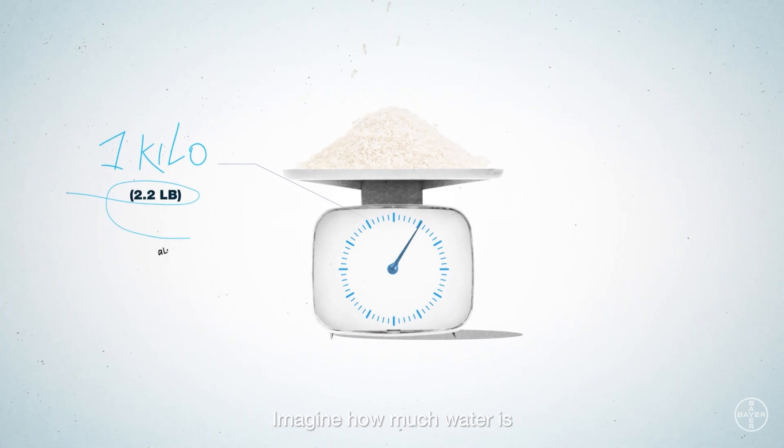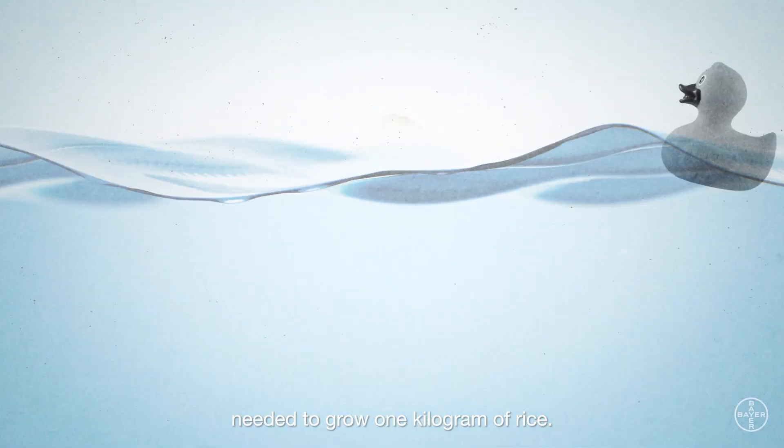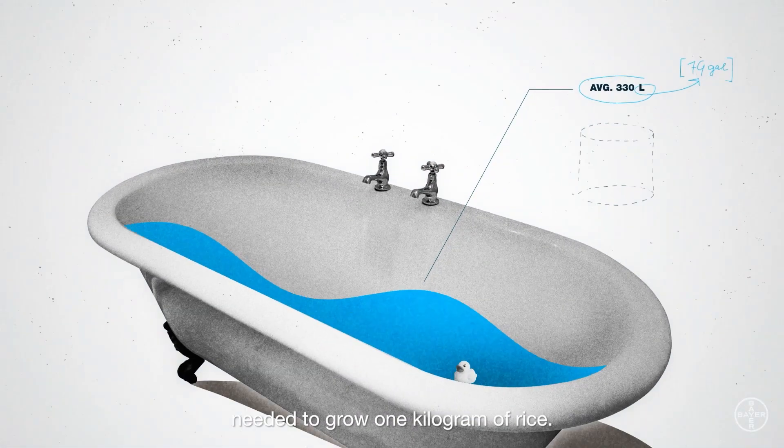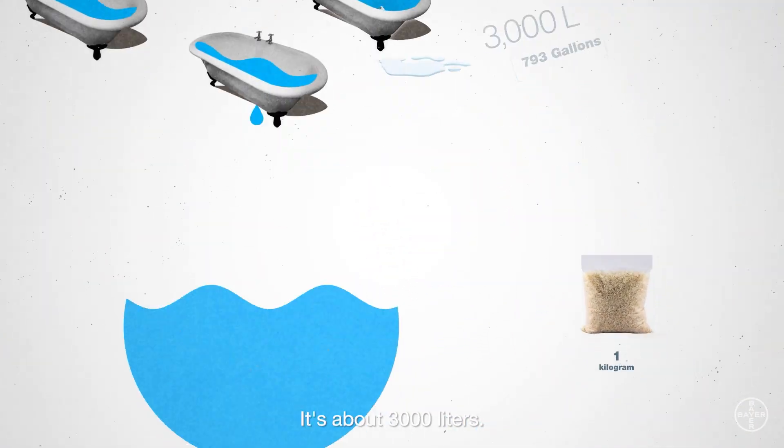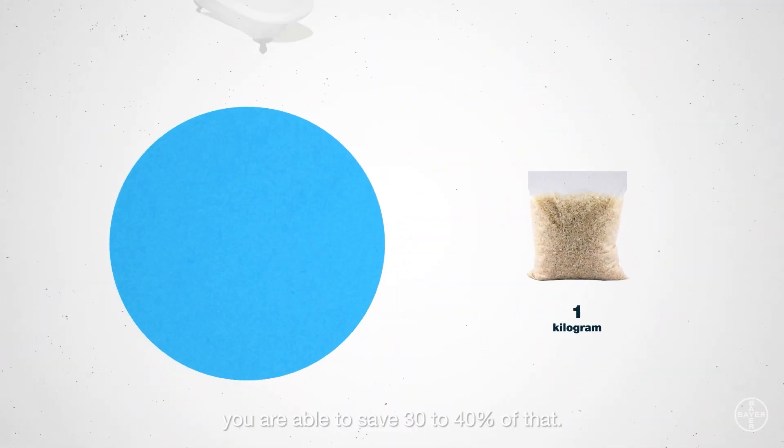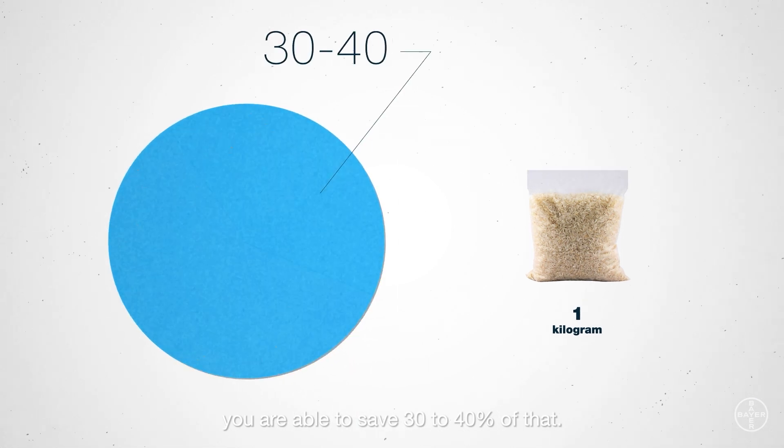Imagine how much water is needed to grow one kilogram of rice. It's about 3,000 liters. And now imagine you are able to save 30 to 40 percent of that.